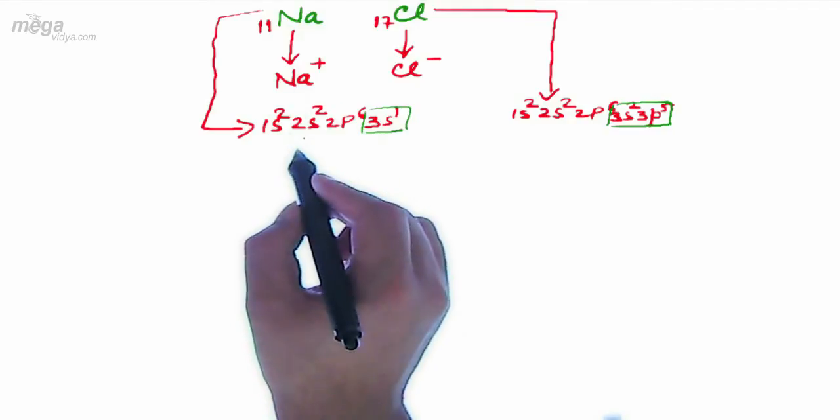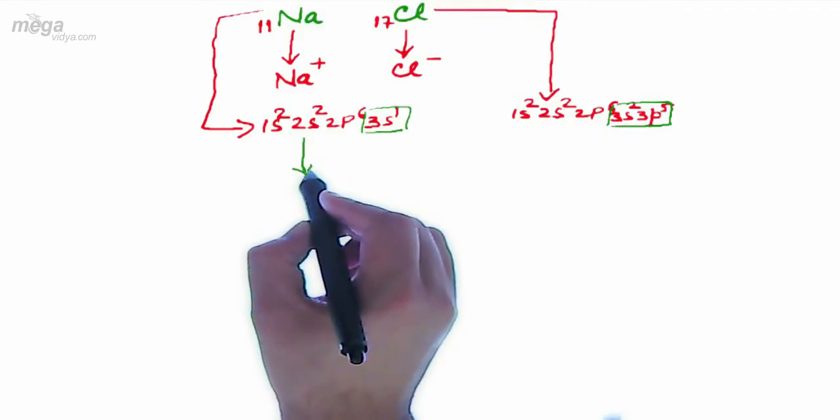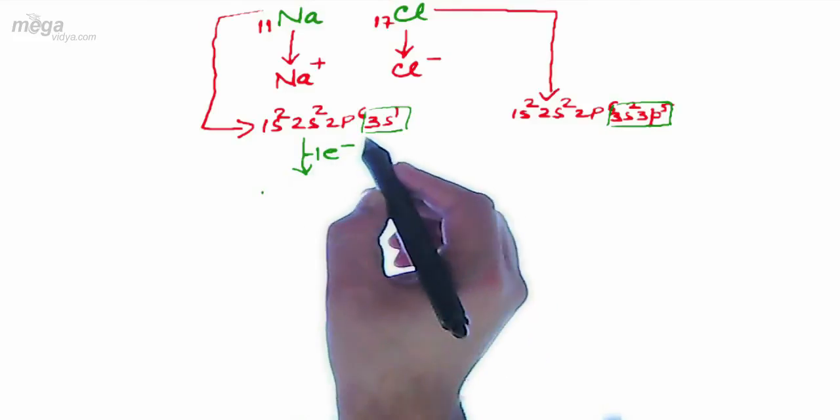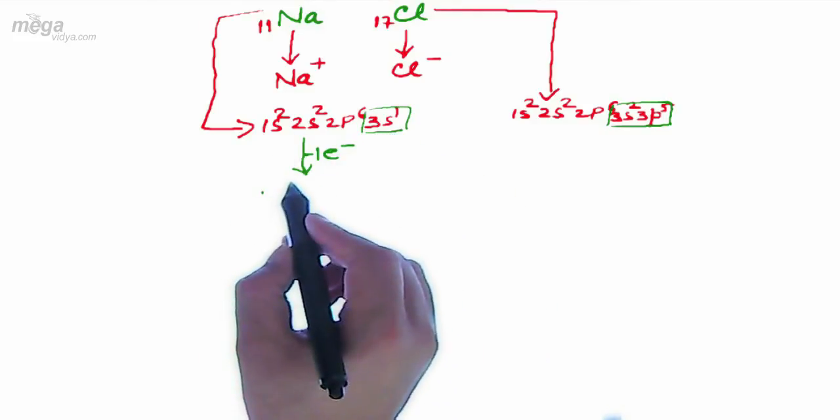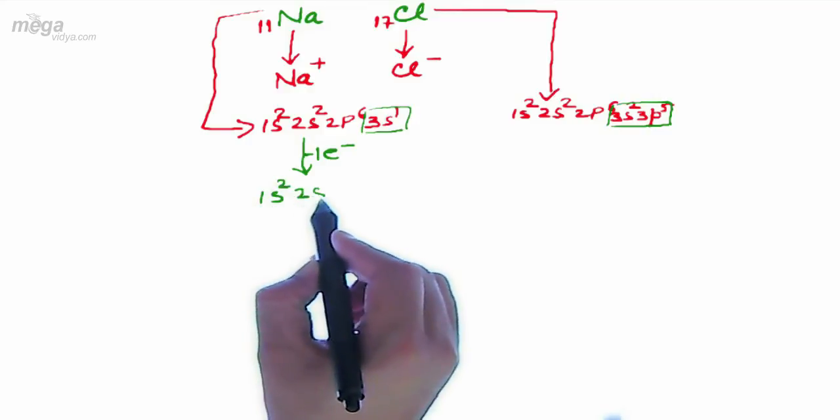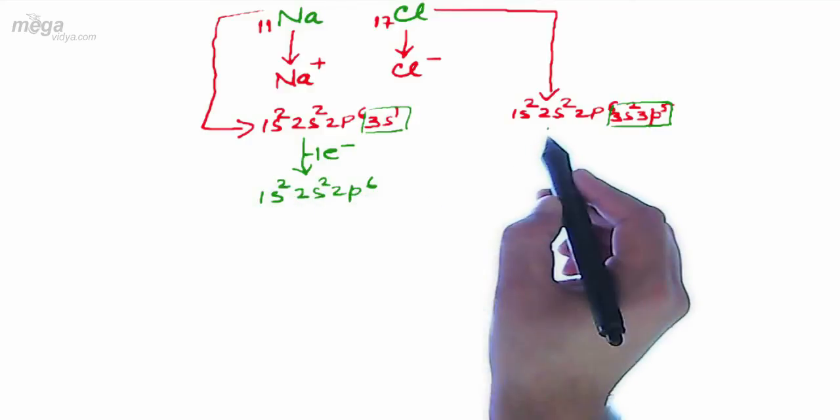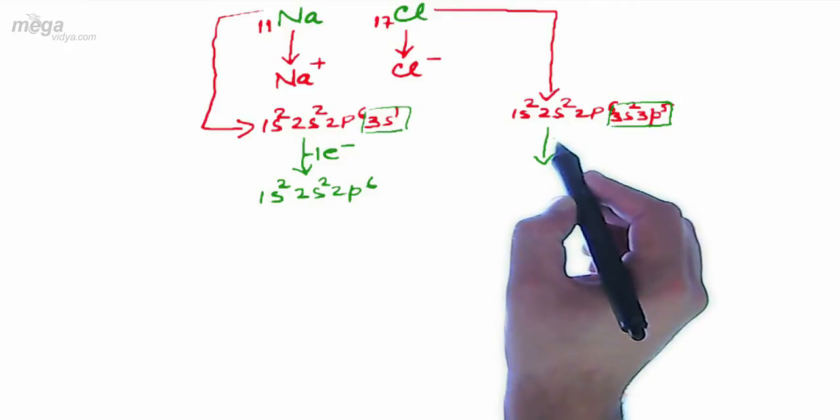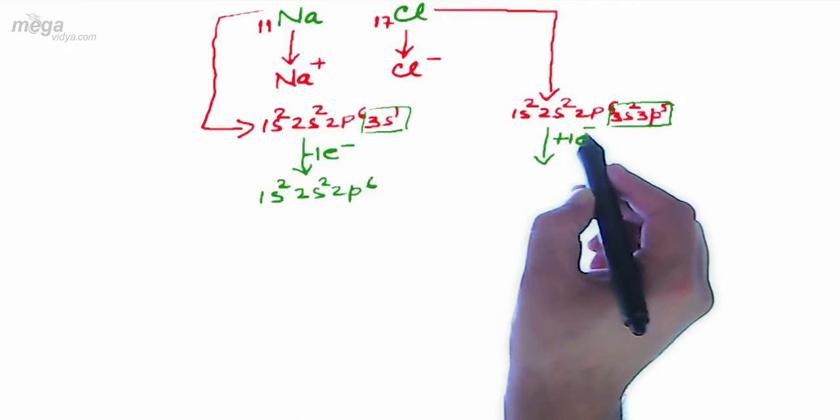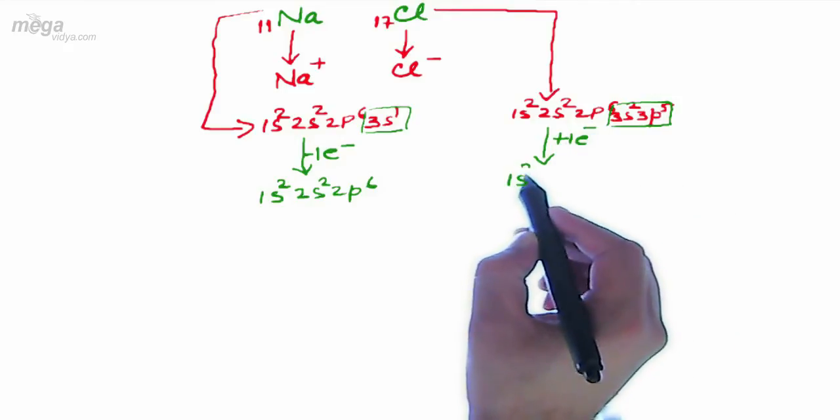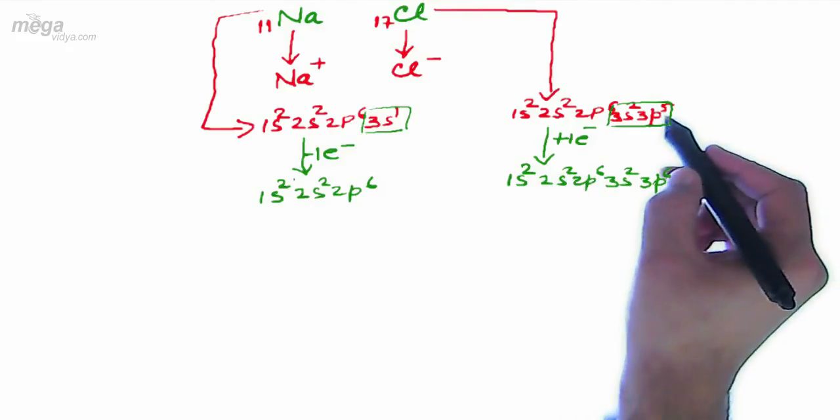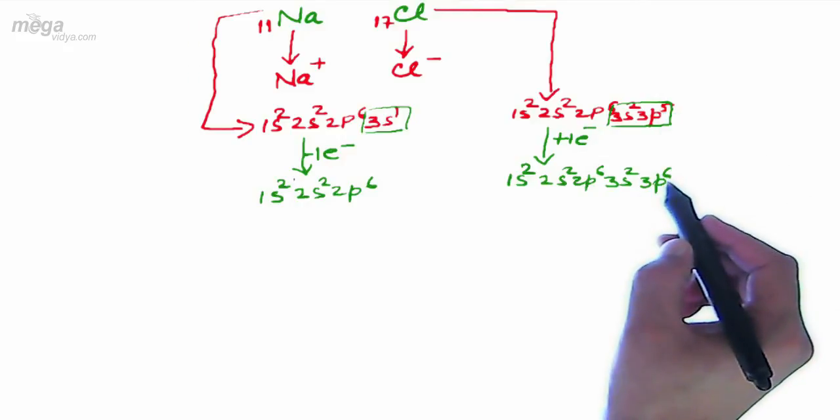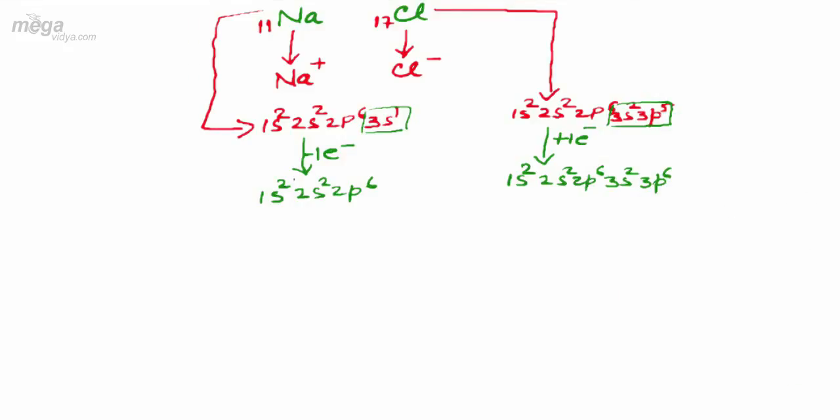When sodium undergoes the loss of one electron, it is obvious that electronic loss will take place from the valence shell. So its new configuration will be 1s2 2s2 2p6. In case of chlorine, after gaining one electron from sodium, its configuration will be 1s2 2s2 2p6 3s2 3p6. Initially it was 3p5, now one electron has been added, so it will be 3p6.